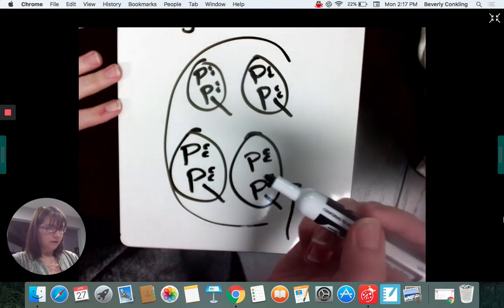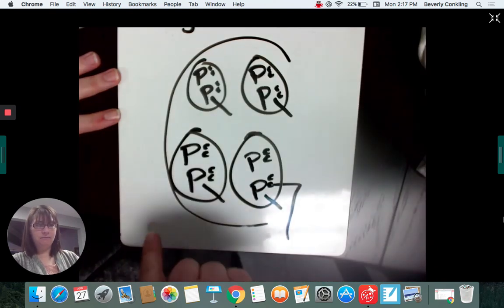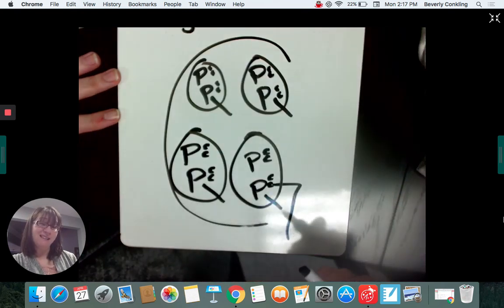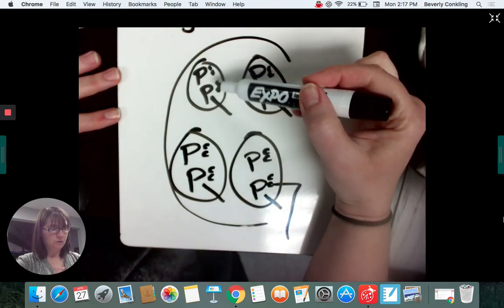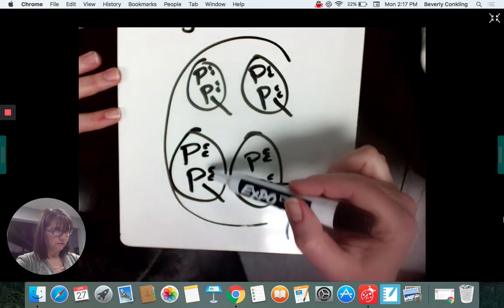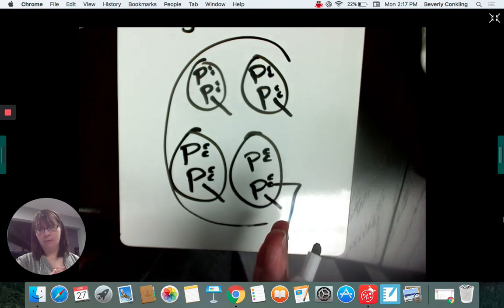And so I can look at this and go, okay, well, in a gallon, if I want to know how many cups are in a gallon, I just count how many C's I wrote in here. So here's 1, 2, 3, 4, 5, 6, 7, 8, 9, 10, 11, 12, 13, 14, 15, 16. So I know that in one gallon, there are 16 cups.